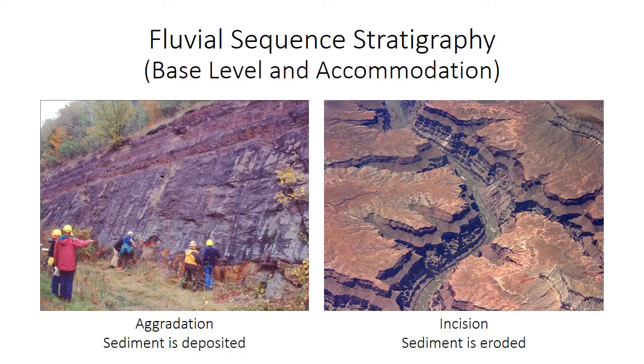They may incise or cut down into the underlying layers, in which case they are actively eroding and transporting sediment rather than depositing it. This video will discuss the factors that control whether a river incises or aggrades. Aggradation refers to the active building up of sediment by the river.